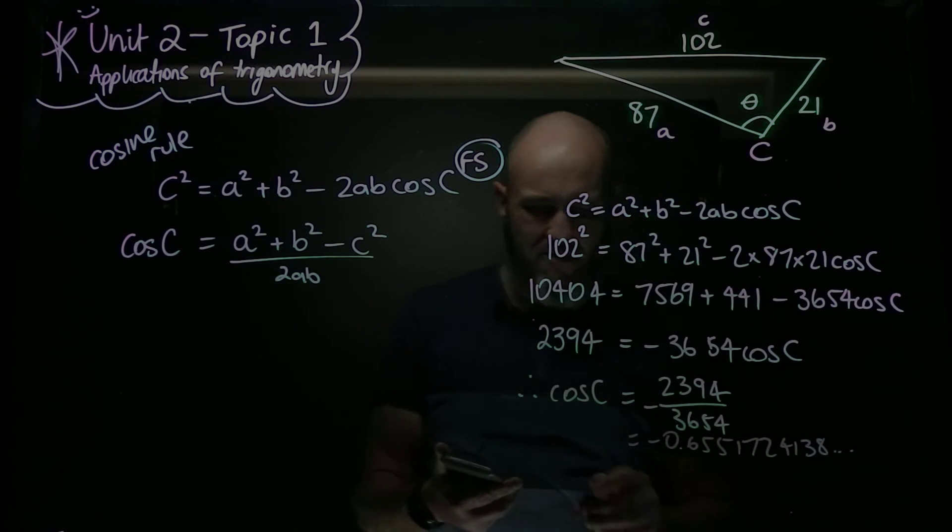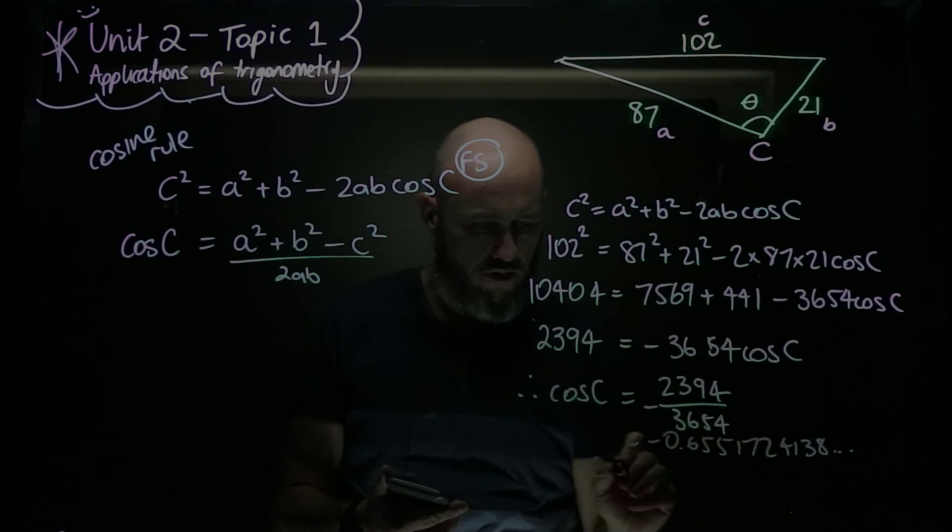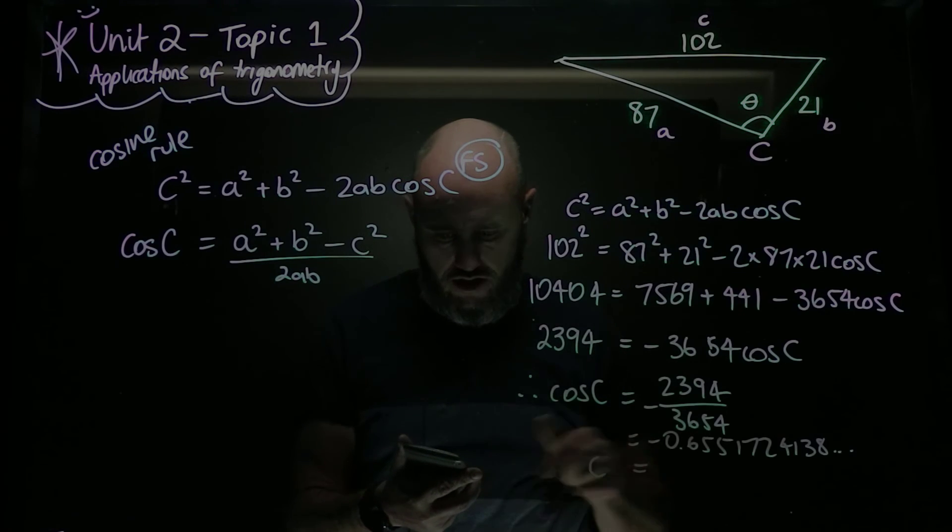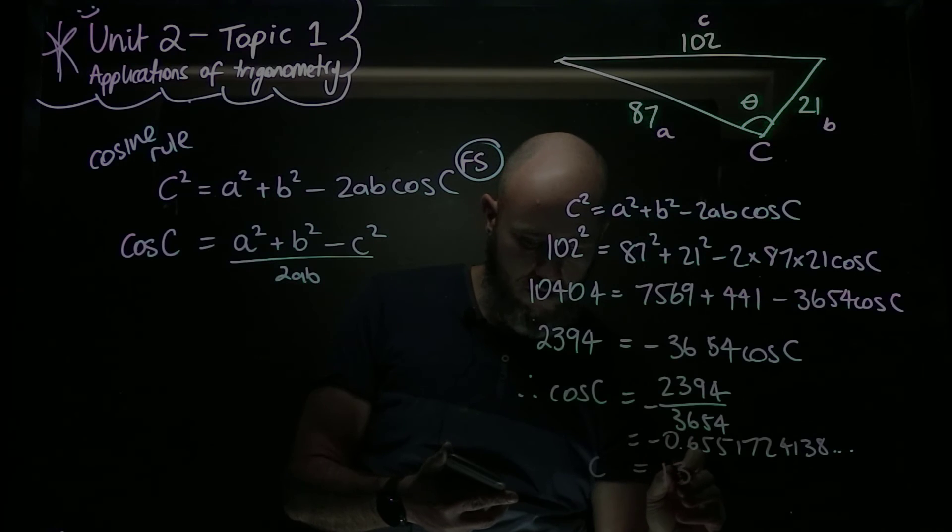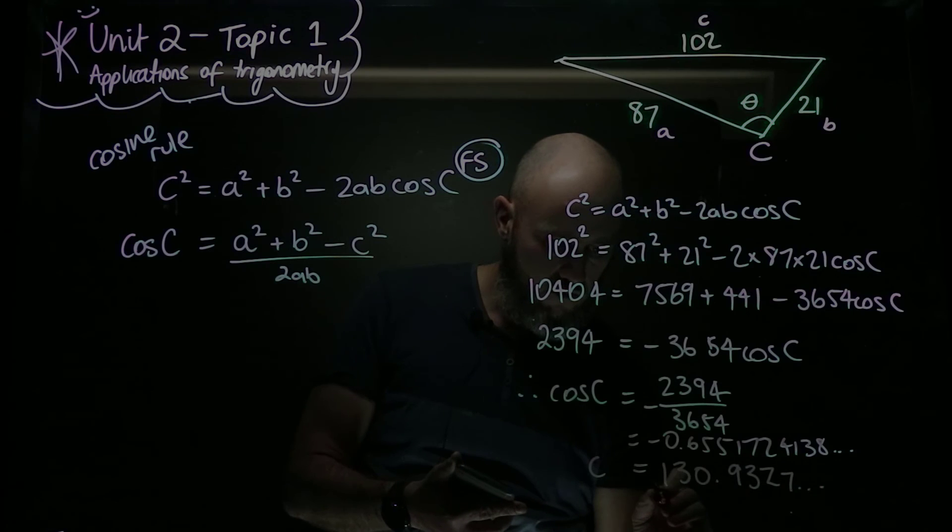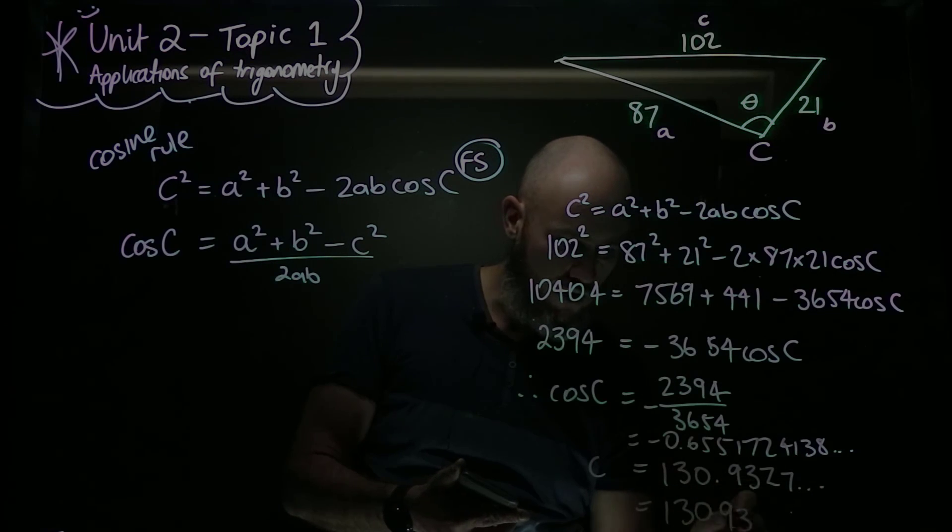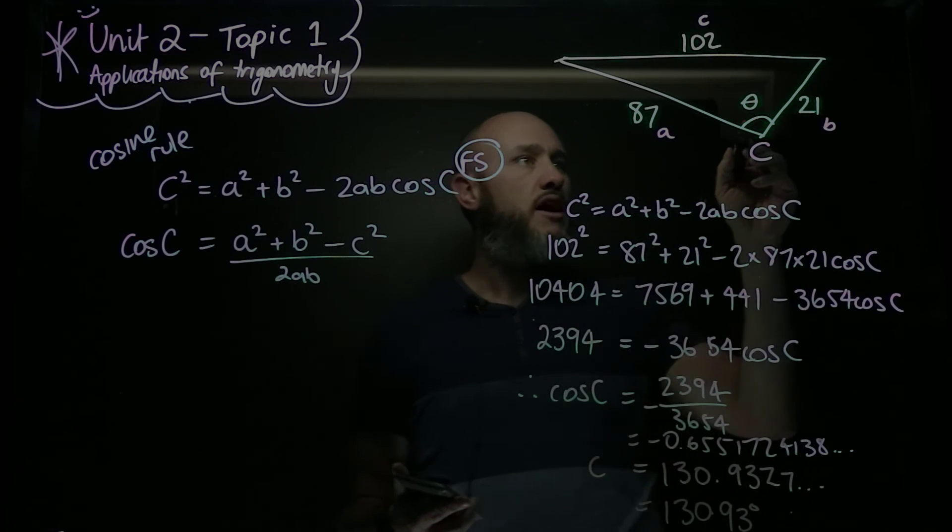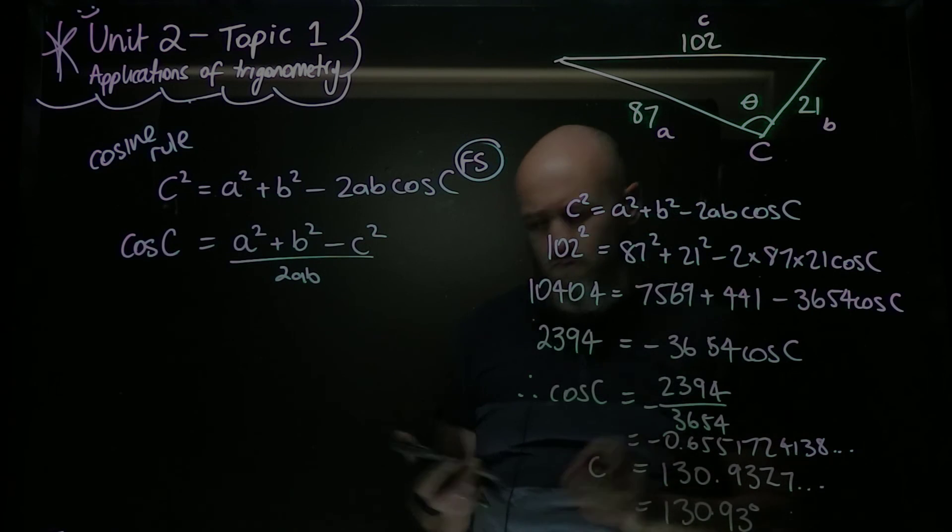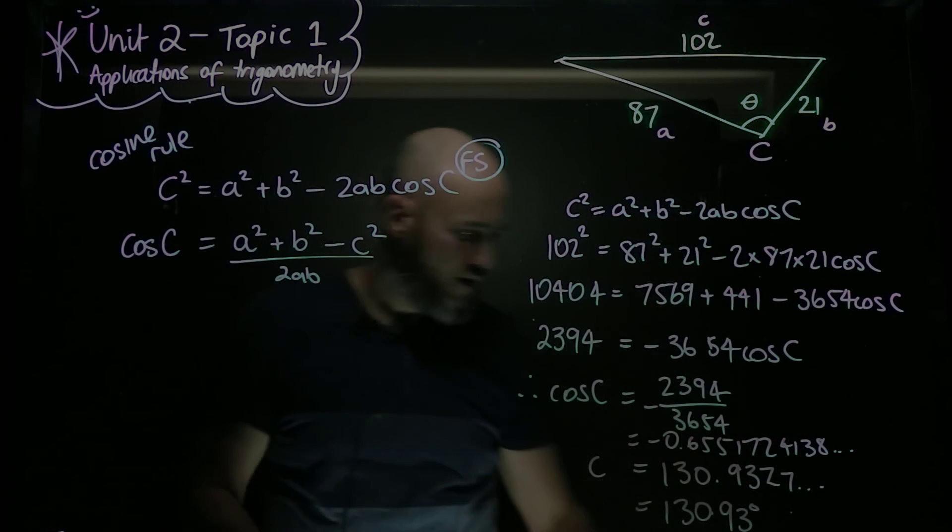I don't have to show that line, but if you're following along it might help. So C is equal to cos inverse of that, shift cos of my answer, and I get 130.9327 dot dot dot, which I'm going to write down as 130.93 degrees. And I'm happy with that because it's clearly opposite the biggest angle. It's a pretty flat triangle. 130, great stuff.